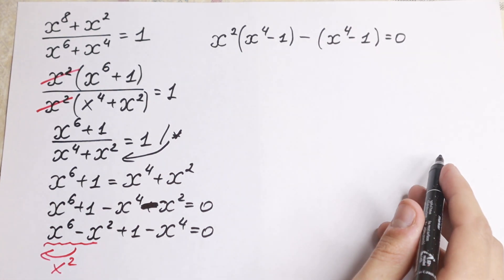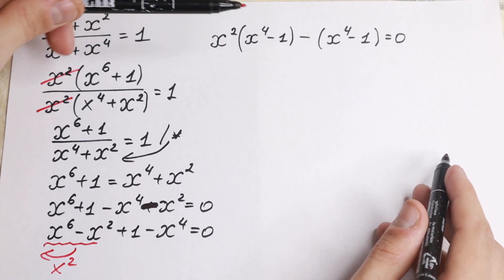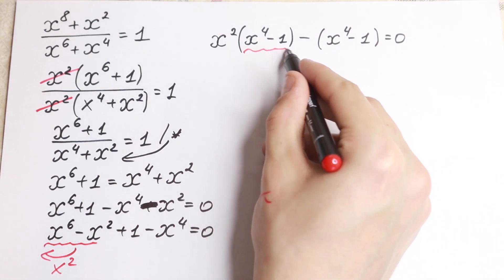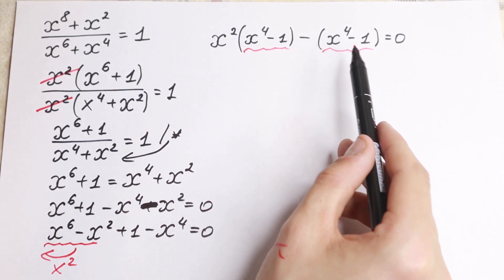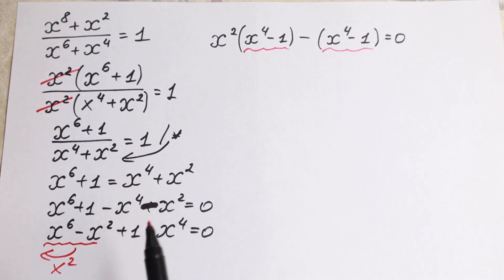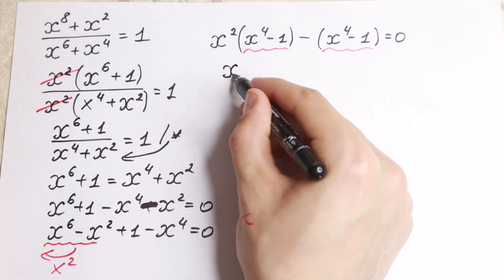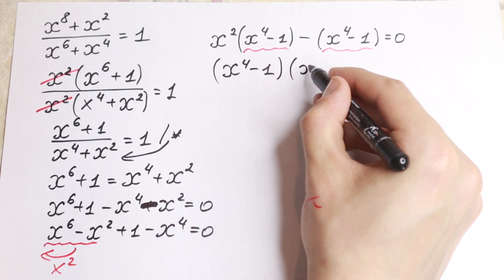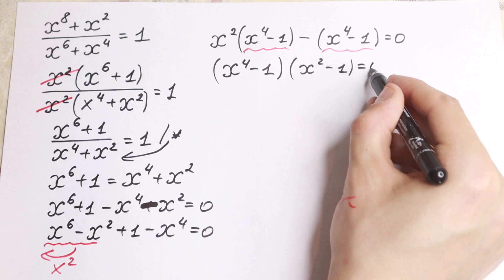As you can see, this is a really good trick! After factoring x², we now have two identical parentheses — (x⁴ minus one) appears in both terms. So we can finally factor that out, and write: (x⁴ minus one) times (x² minus one) equal to zero.